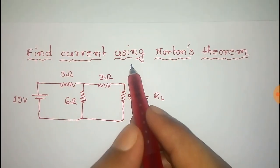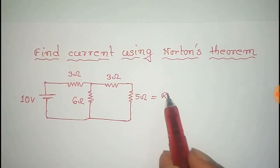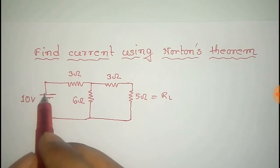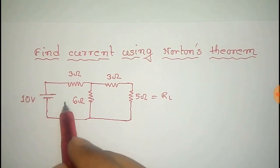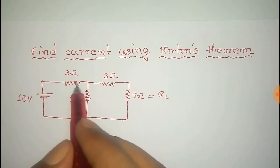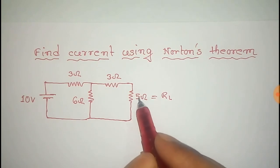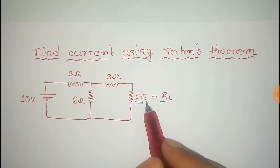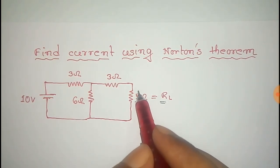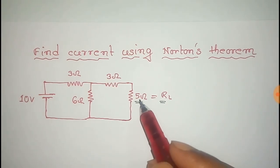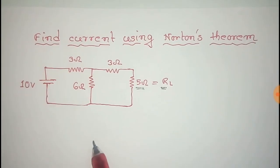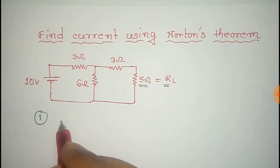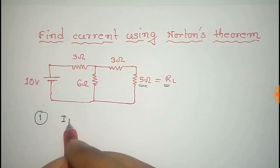We will find the current of a circuit using Norton's theorem. That is the given circuit with a voltage source of 10 volts and resistors of 3, 6, 3, and 5 ohms. This 5 ohm is the load resistor, and we have to find the current through this 5 ohm resistor.